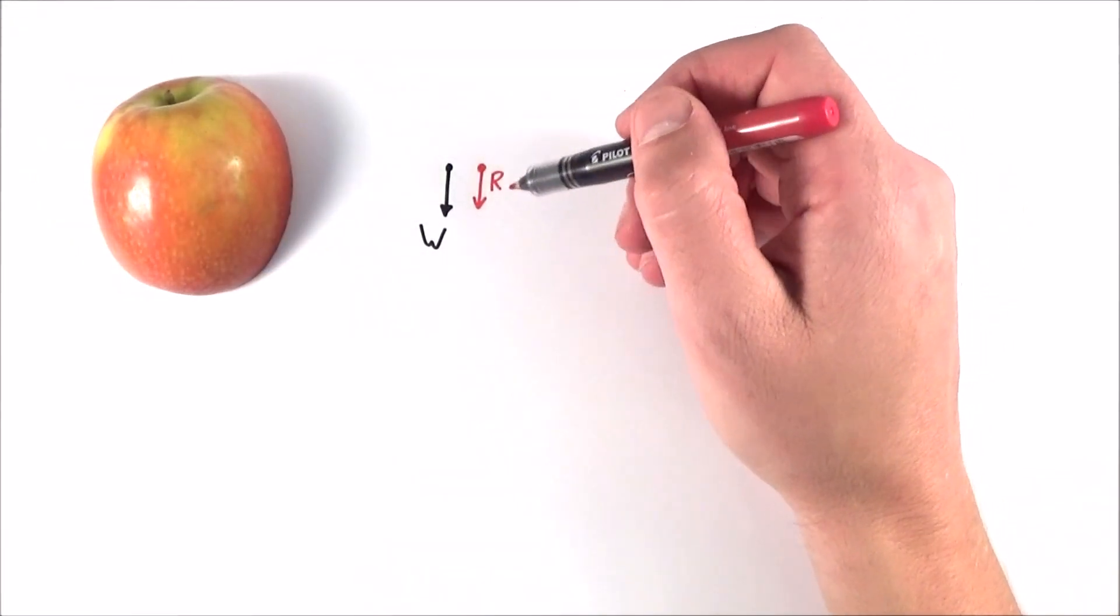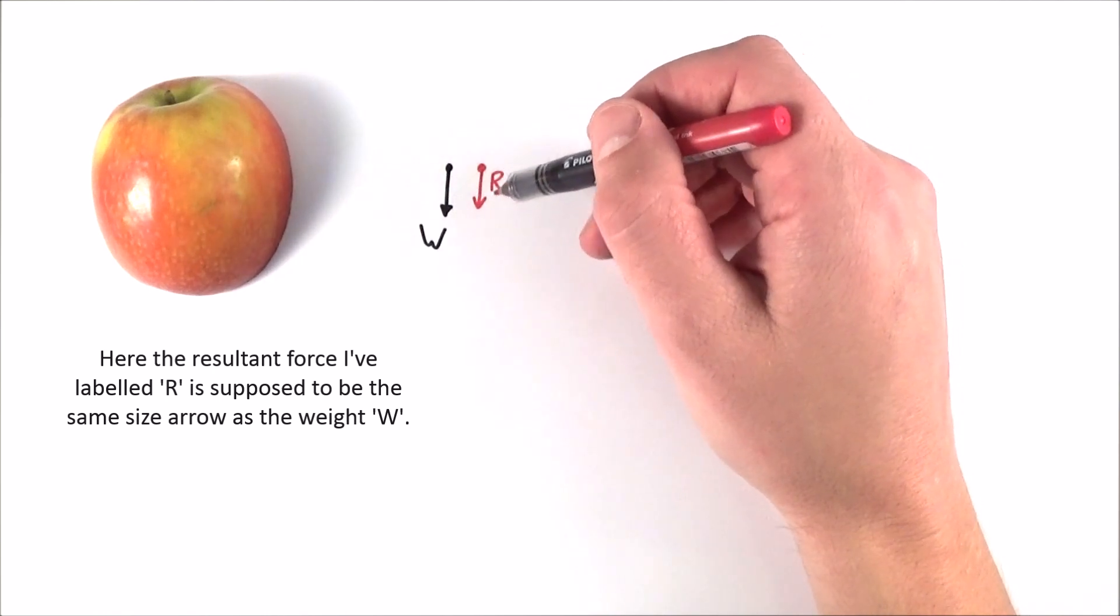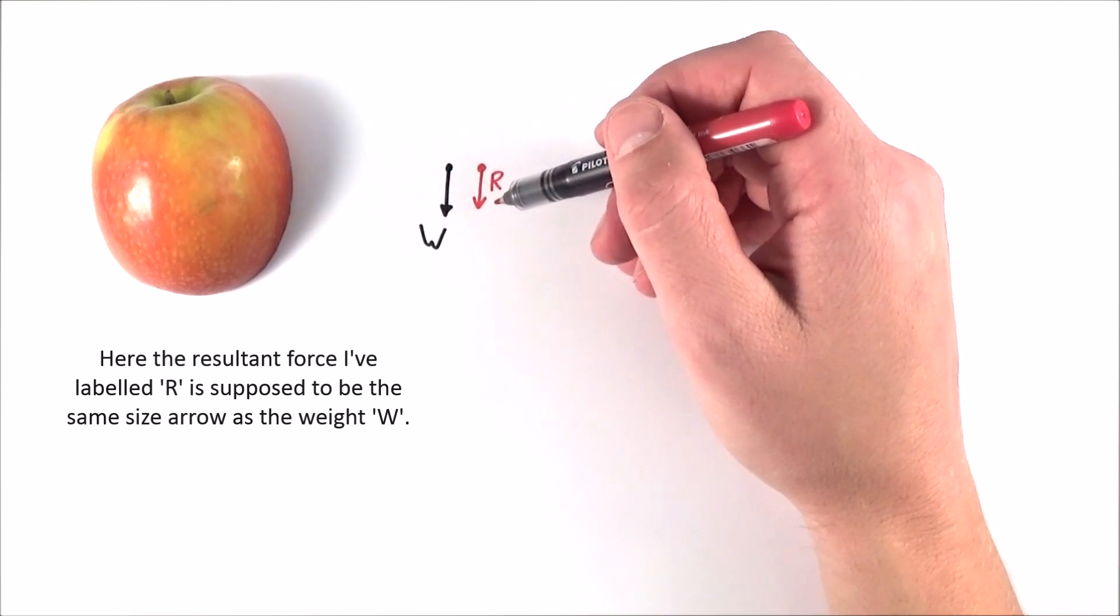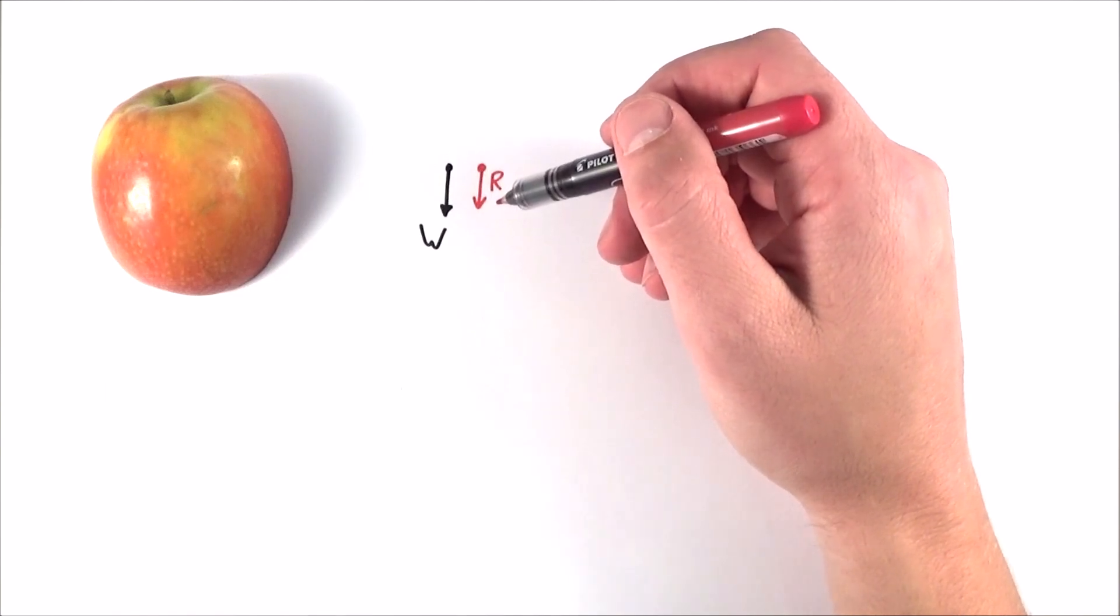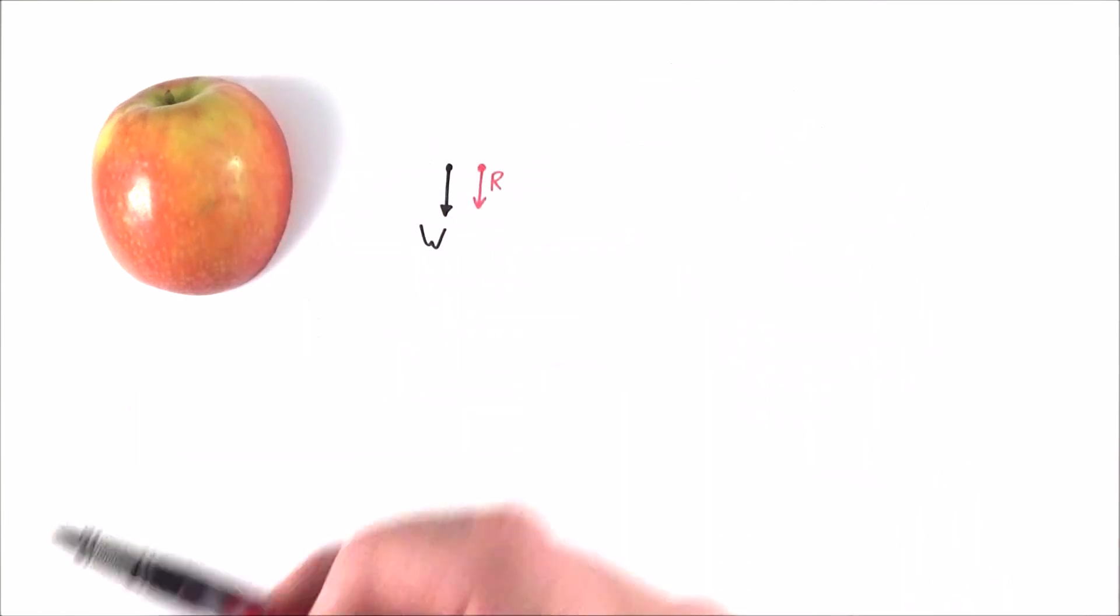I have here then the resultant force which is acting upon that apple, and this is just due to the weight of the object. This is going to cause a downwards motion and there's going to be an acceleration because we have unbalanced forces. So this is basically the first step in the journey of the apple.